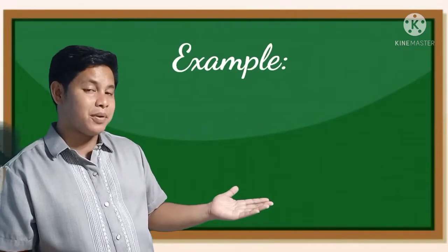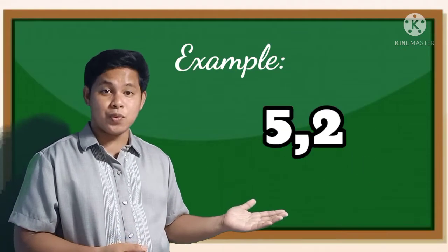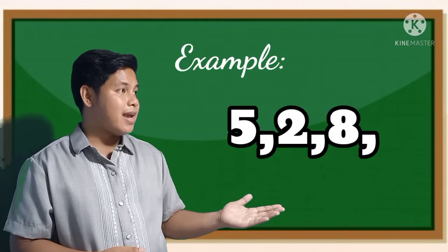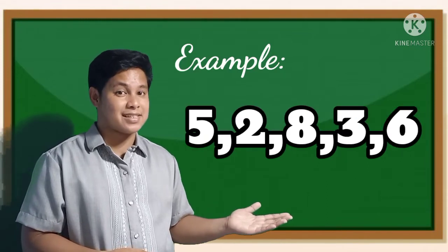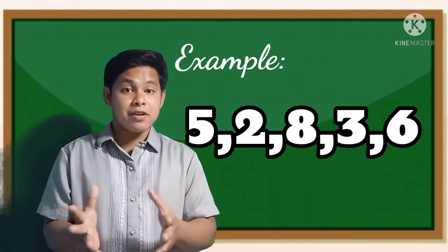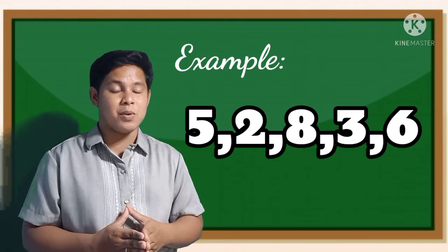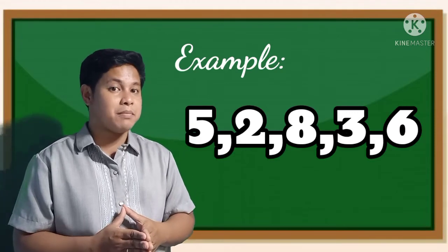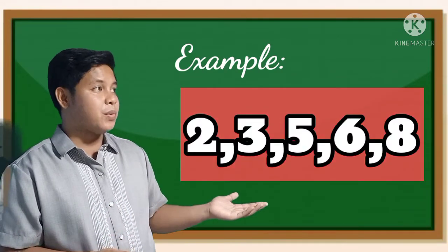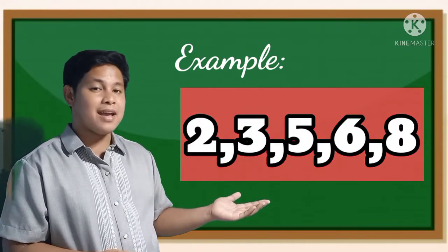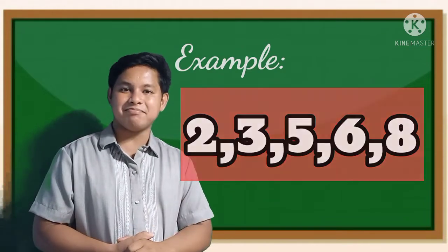For example, I have here 5, 2, 8, 3, and 6. If I arrange these numbers in ascending order, it must be 2, 3, 5, 6, and 8.